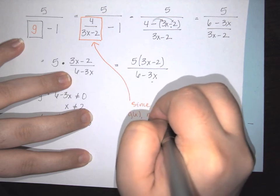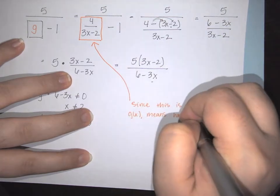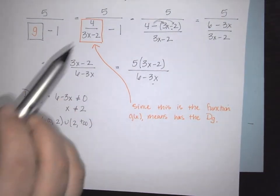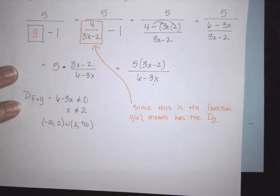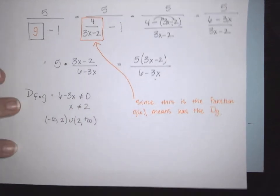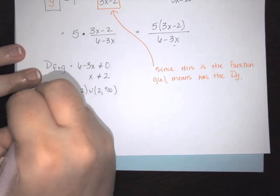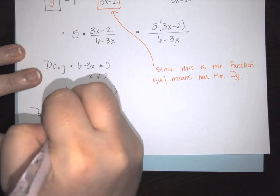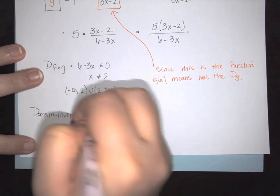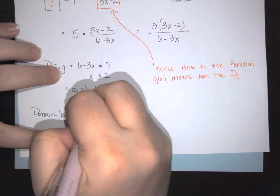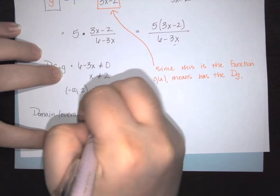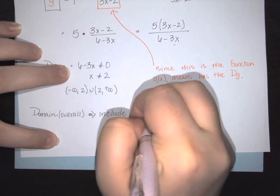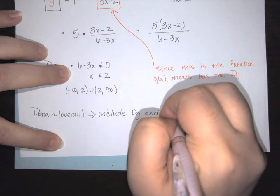that means it has the domain of g. Since my overall function incorporates the domain of g, then my overall domain has to incorporate it too. So what that means is that my domain, my overall domain,